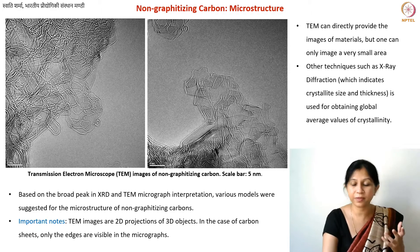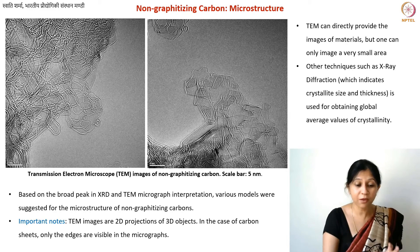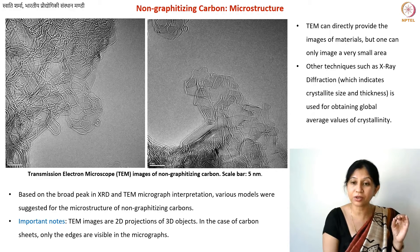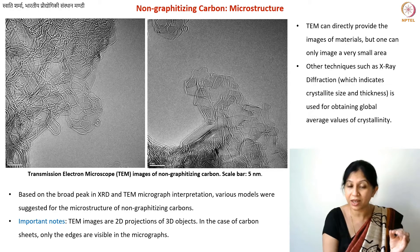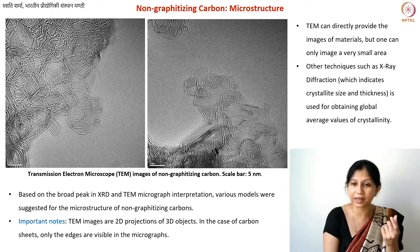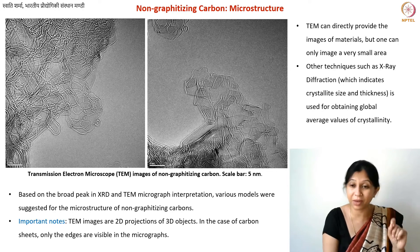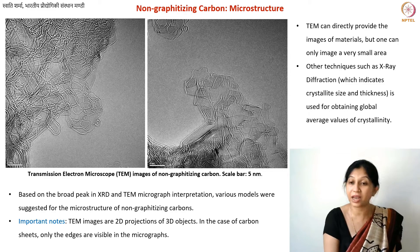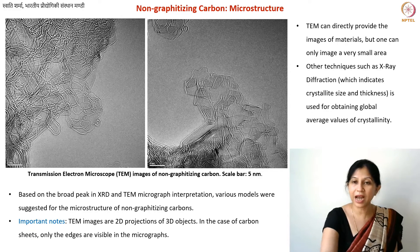X-ray diffraction, Raman spectroscopy — there are many techniques. The idea is that if you want to understand the microstructure or crystallinity of a material, you need supporting data, not just TEM images. This is because TEM covers only a small region, and also because the electron beam itself may have caused some damage to the microstructure. There are many challenges associated with the interpretation of such images.